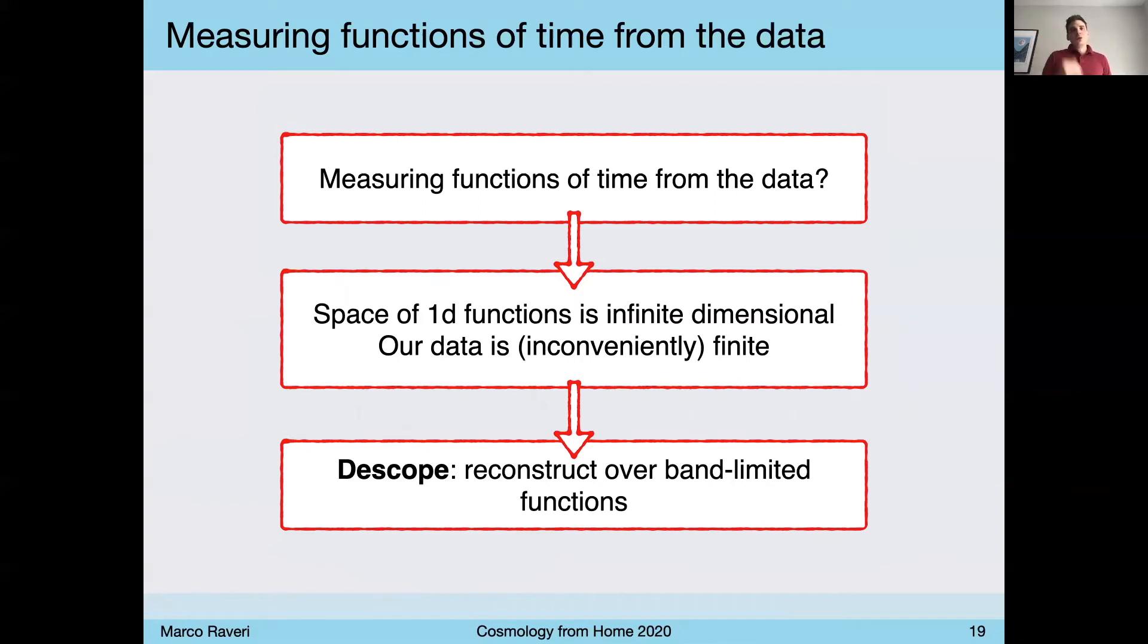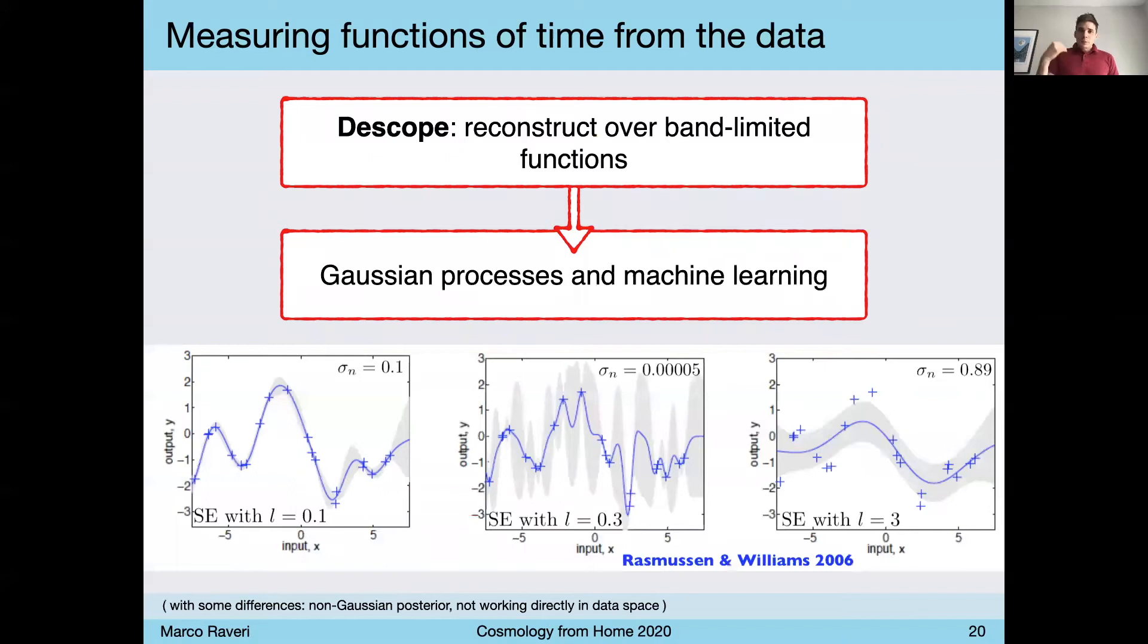But as it turns out, what we need to do to make progress is slightly de-scope our project. And instead of reconstructing all possible functions of time, all possible theories of gravity, we want to reconstruct functions that have slow variations. Because as basically Fourier analysis tells us, the space of band limited functions, functions up to a certain frequency is finite dimensional.